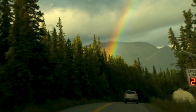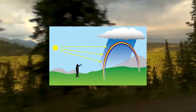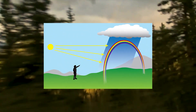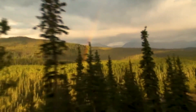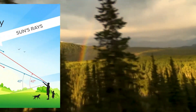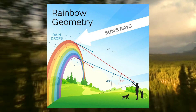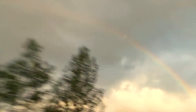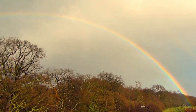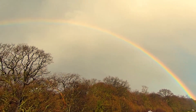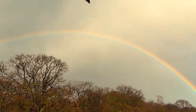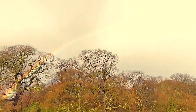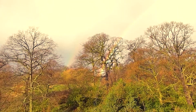The position of the sun and the raindrops in relation to the observer need to be just right for a rainbow to form. The sun needs to be behind the viewer, at an angle of less than 42 degrees above the horizon. The lower the sun in the sky, the more of an arc of a rainbow the viewer will see. Rain, fog, or some other source of water droplets must be in front of the viewer.